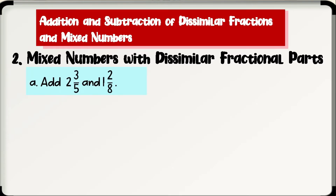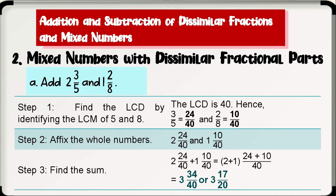Letter A: add 2 and 3 fifths and 1 and 2 over 8. Step 1: find the LCD by identifying the LCM of 5 and 8. Since the LCM of 5 and 8 is 40, the LCD is 40. Hence, 3 fifths equals 24 over 40 and 2 over 8 equals 10 over 40. Step 2: affix the whole numbers — we have 2 and 24 over 40 and 1 and 10 over 40. Step 3: find the sum. Add the whole numbers — 2 plus 1 is 3. Add the numerators — 24 plus 10 is 34. Copy the denominator 40. Therefore, 2 and 3 fifths plus 1 and 2 over 8 is equal to 3 and 34 over 40, or 3 and 17 over 20.